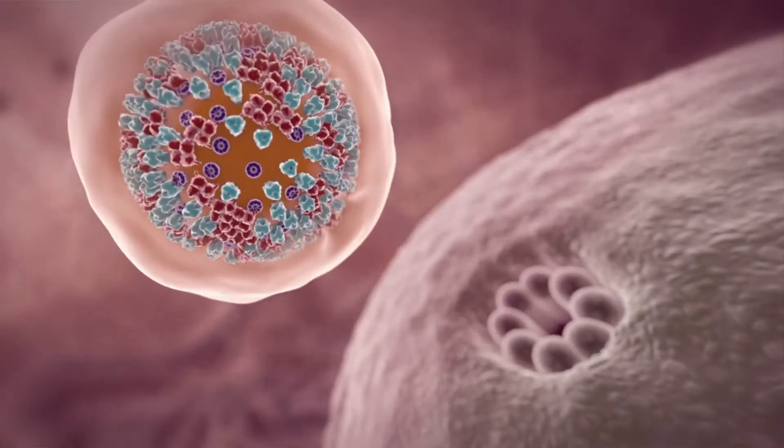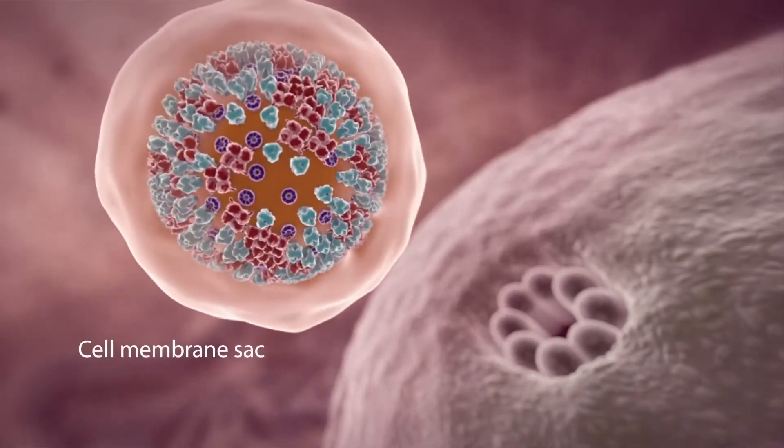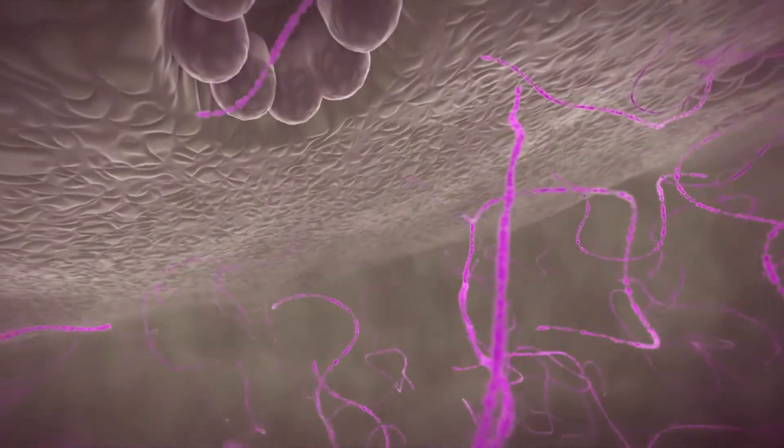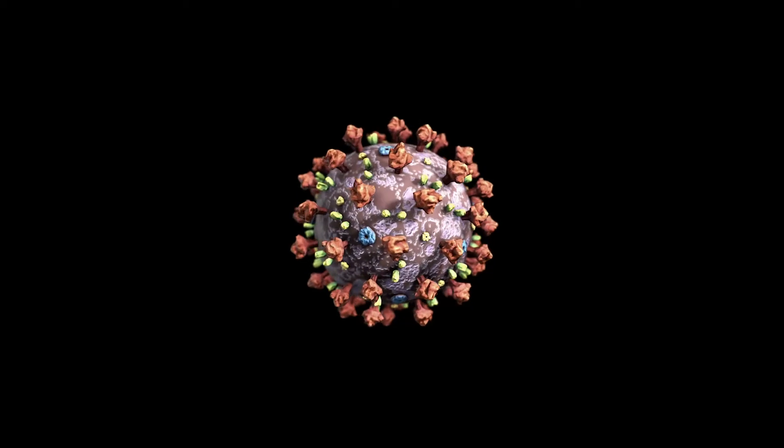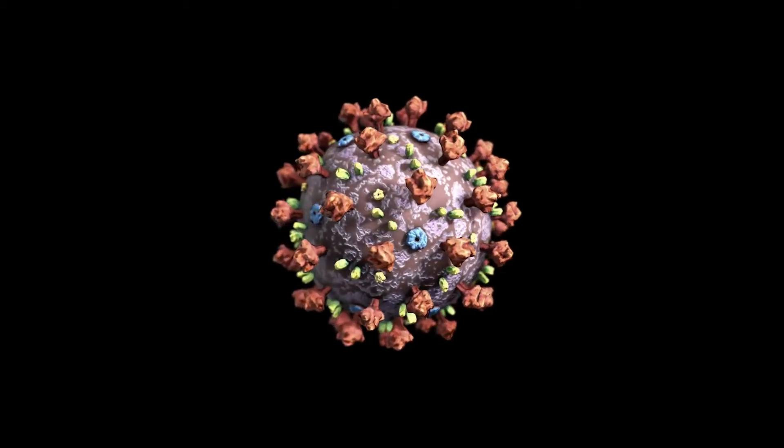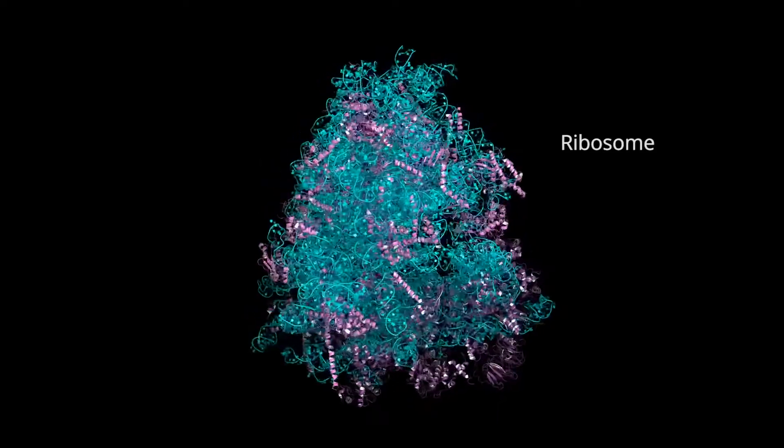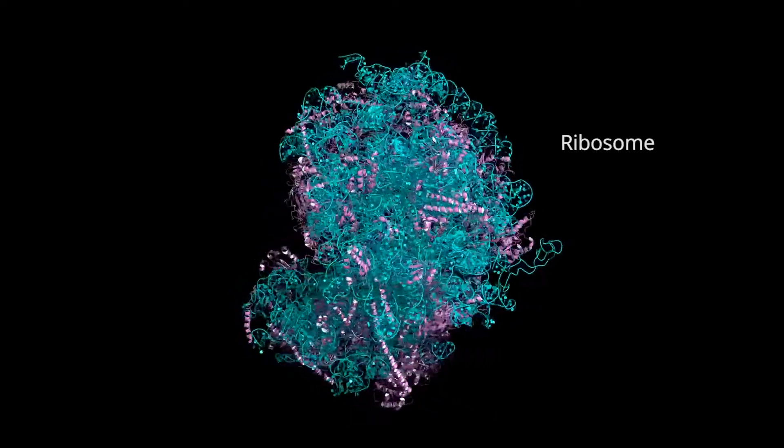A typical flu virus would travel inside a sac made from your cell membrane to your cell's nucleus that houses all its genetic material. The coronavirus, on the other hand, doesn't need to enter the host cell nucleus. It can directly access parts of the host cell called ribosomes.